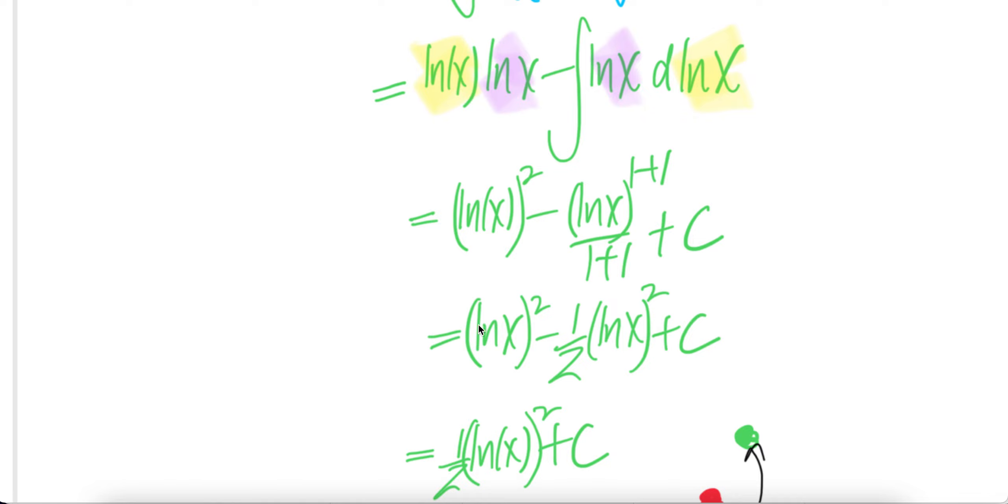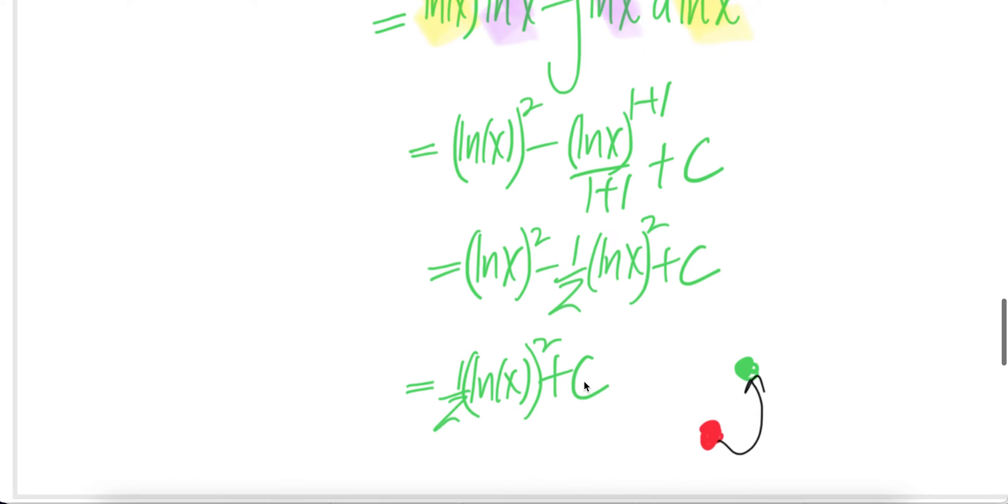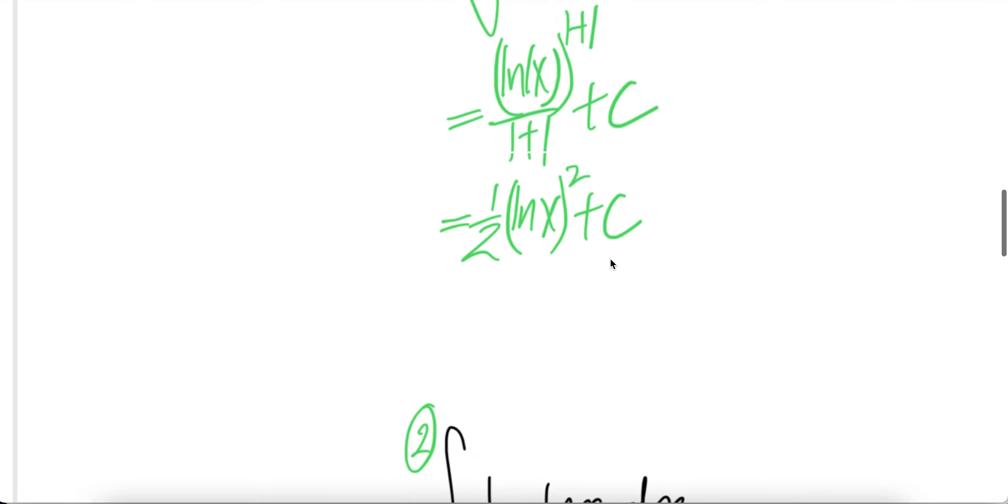1 ln x squared minus half ln x squared, you get half ln x squared plus c. Notice that the answer you get here is the same as that.